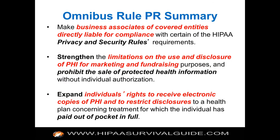The omnibus rule made business associates covered entities directly liable for compliance with all three rules — the Privacy Rule, Security Rule, and Breach Notification Rule. It just finalized the rulemaking. The omnibus rule strengthens the limitation on use and disclosure of PHI for marketing and fundraising, and outright prohibits the sale of protected health information. It also expanded individuals' rights to receive electronic copies of PHI and to restrict certain disclosures.